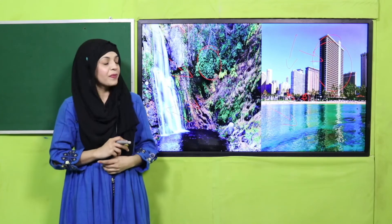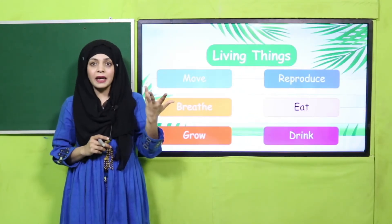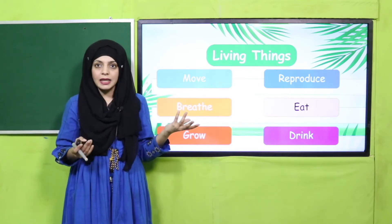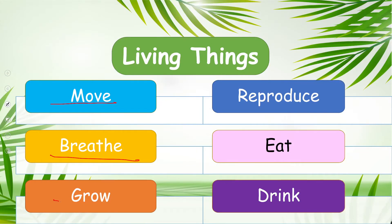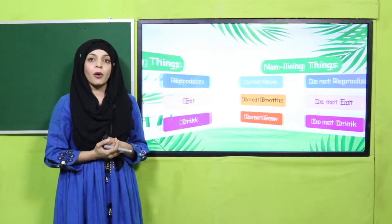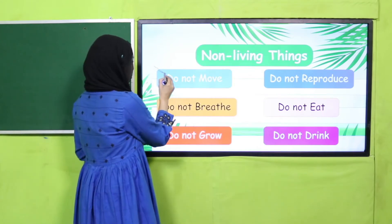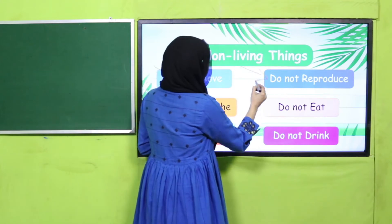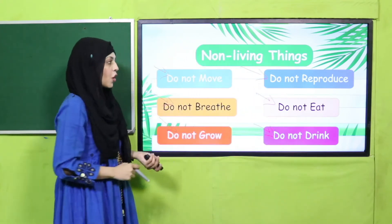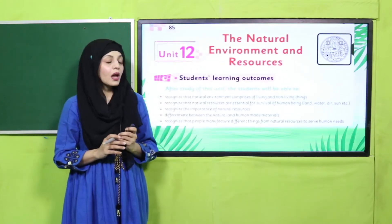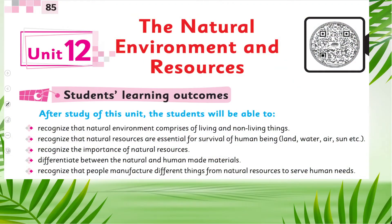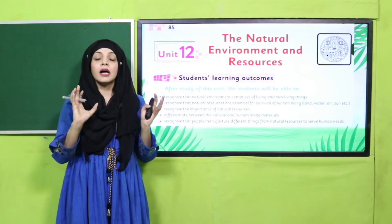Now let's quickly revise the properties of living things. What do living things do? They move, they breathe, they grow, they reproduce — that means they have babies — they eat and they drink. These are all the properties of living things. Now the properties of non-living things: they do not move, they do not breathe, they do not grow, they do not reproduce, do not eat and do not drink. Our environment has natural environments like rivers, jungles, forests, and deserts.